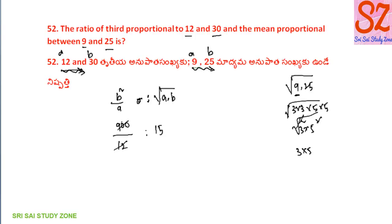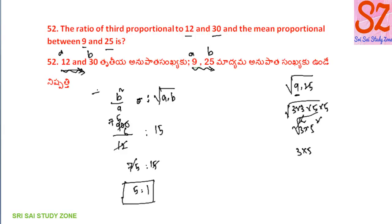So 900 divided — choose 12 times 7 is 84, giving 6 remainder. So 75 is to 15. This cancels, giving 5 is to 1. Simple questions. Introduction class questions.